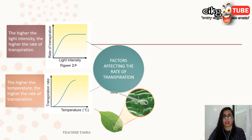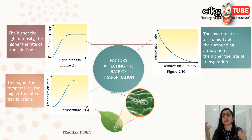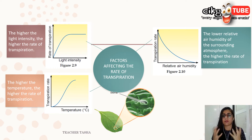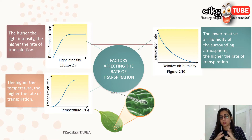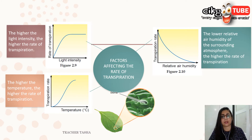Next is relative air humidity — notice that the graph goes downwards here, so it's the opposite. Air humidity refers to how many water molecules are in the atmosphere. On a rainy day, the atmosphere is filled with water vapor. When there are many water molecules around the leaves, evaporation from the stomata reduces, causing transpiration to slow down.